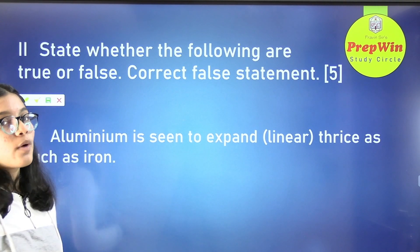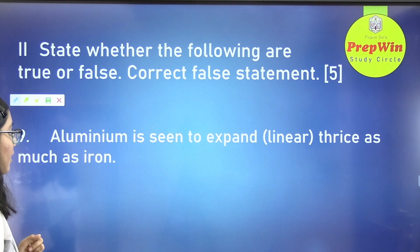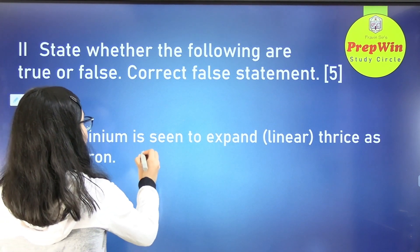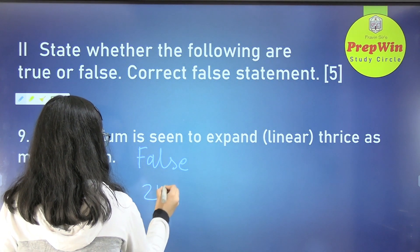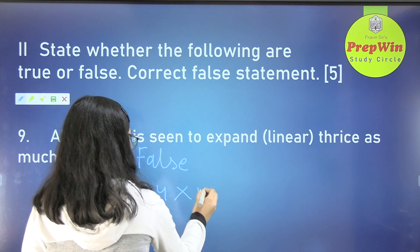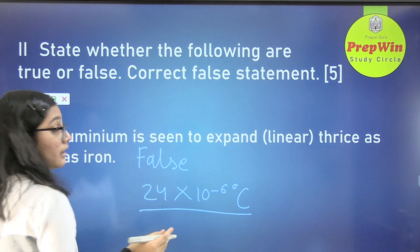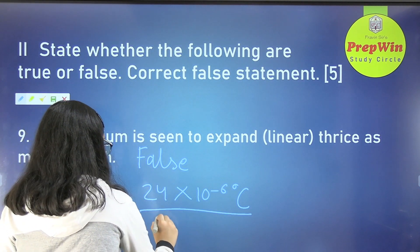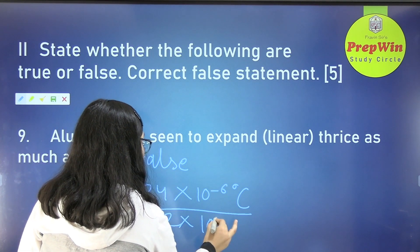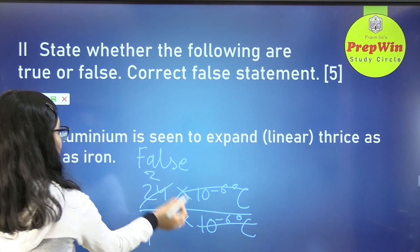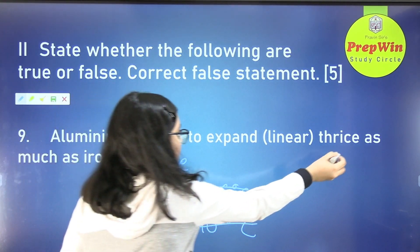The next question is actually quite tricky: aluminium is seen to expand thrice as much as iron. This is a false statement. The linear coefficient of aluminium is 24 into 10 raised to minus 6 per degree Celsius, and the linear coefficient of iron is 12 into 10 raised to minus 6 per degree Celsius. So aluminium expands twice as much as iron, not thrice.